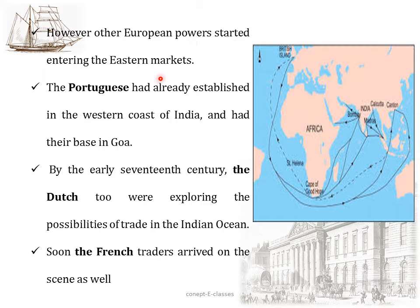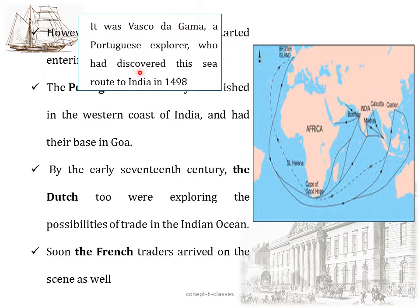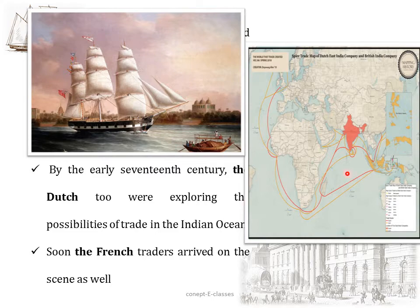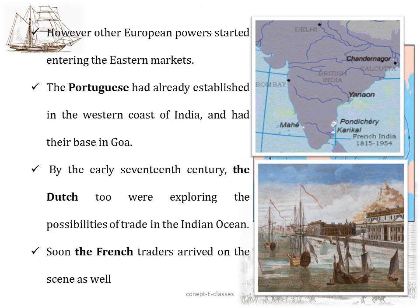However, the Royal Charter could not prevent other European powers from entering the eastern market. By the time the first English ships sailed down the west coast of Africa, round the Cape of Good Hope, and across the Indian Ocean, the Portuguese were already established on the western coast of India. This route was discovered by Portuguese explorer Vasco da Gama in 1498 — the first European to reach India. By the early 17th century, the Dutch were also exploring trade in the Indian Ocean, with a base at Pulicat.